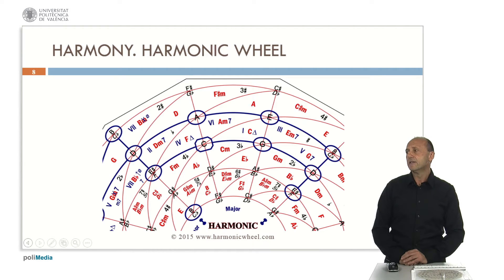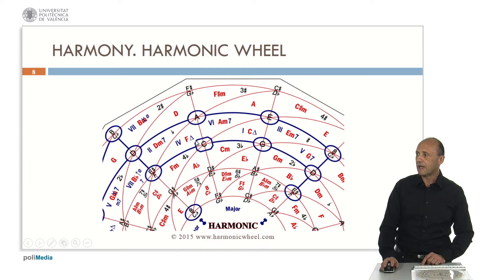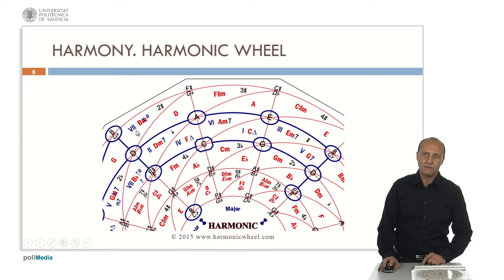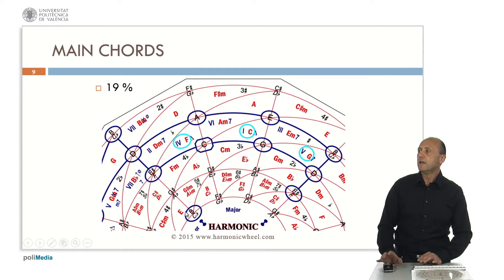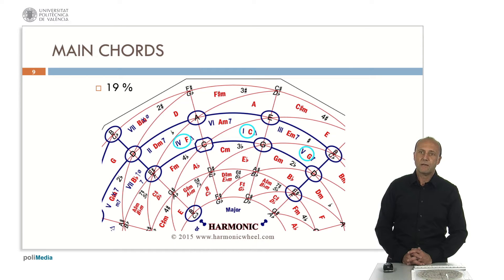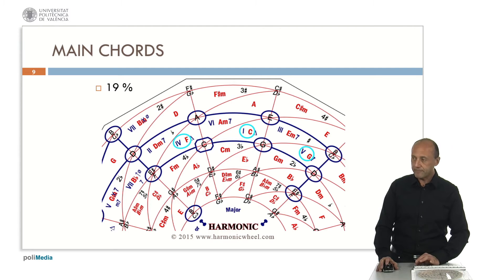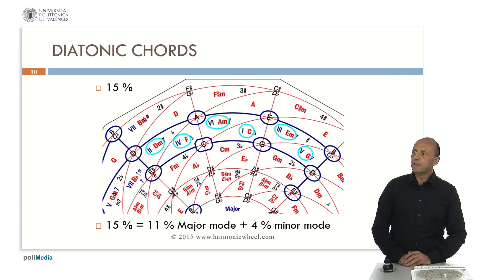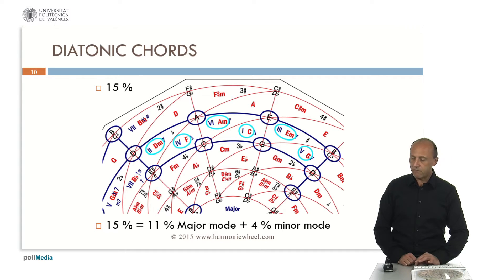The harmonic wheel gives us these seventh chords or tetrad chords very easily. We select the tonic by this little rectangle. Here we can see the tonic C, and we obtain a big rectangle with the degrees one to six. The seventh degree will be disregarded for the moment. The three main chords in C major are the first, fourth and fifth degrees, that is chords C major, F major and G major. Nineteen percent of the songs are composed with only the main chords in a major key. Regarding the diatonic chords, 15% of these songs are composed by using at most these six chords, of which 11% are written in a major mode and 4% in a minor mode.